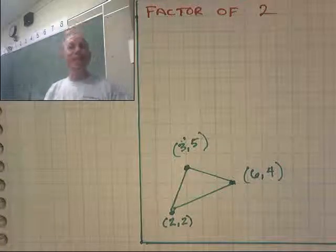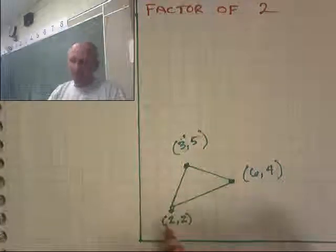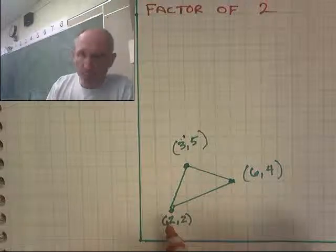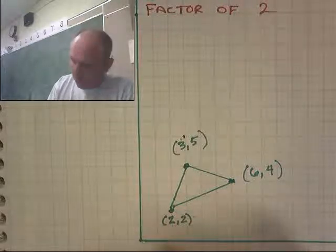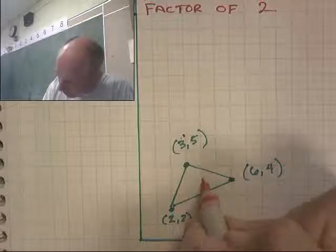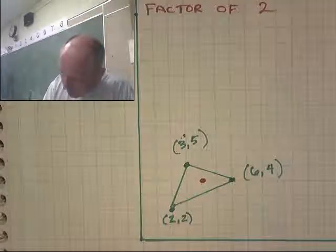So what I'm going to do is I'm going to take every point and I'm going to multiply the x and the y by 2. So 2,2. That becomes 4,4, which is right there.